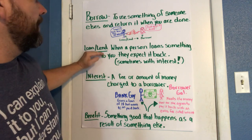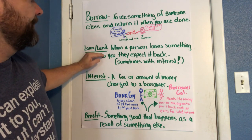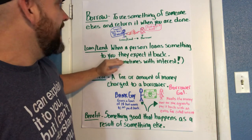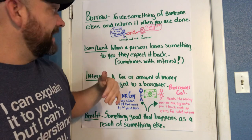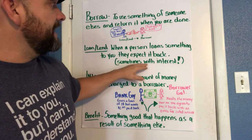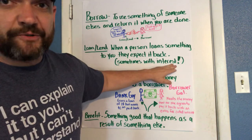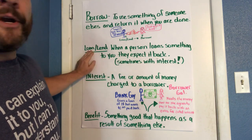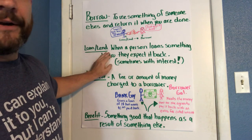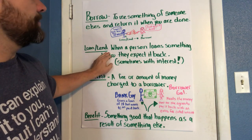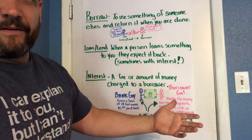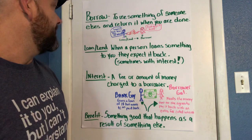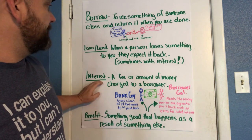When we loan or lend, that's when a person loans something to you and they expect to get it back — and sometimes with interest. We're about to talk about what interest is. The loaner or lender is the person who is giving the thing away but expecting it back in good condition.